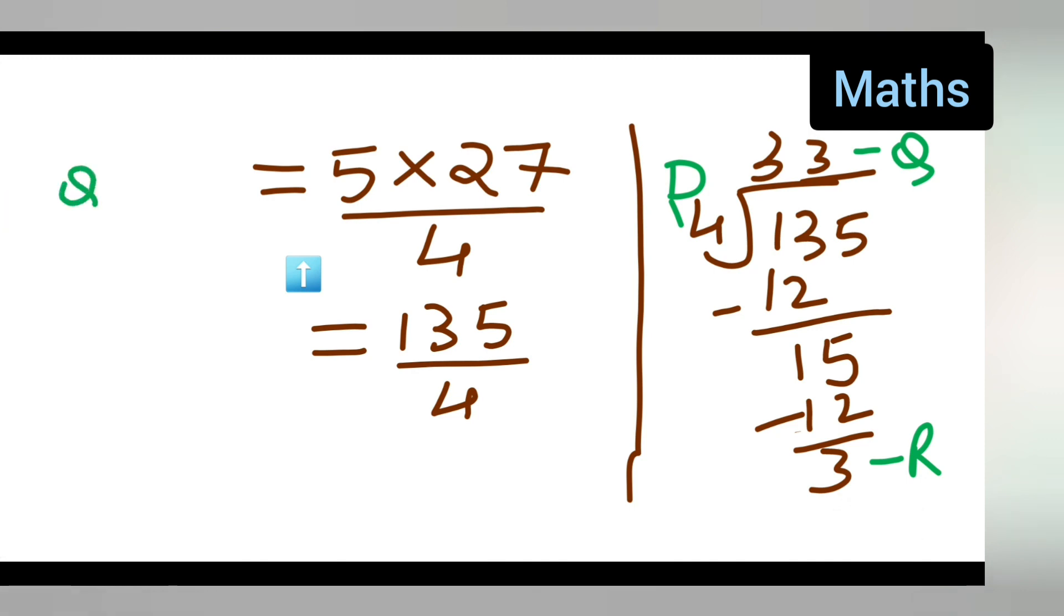Write it in this form: quotient, remainder upon dividend. Now this is equal to - the quotient is 33, so write down 33, your remainder is 3, and your d is 4.